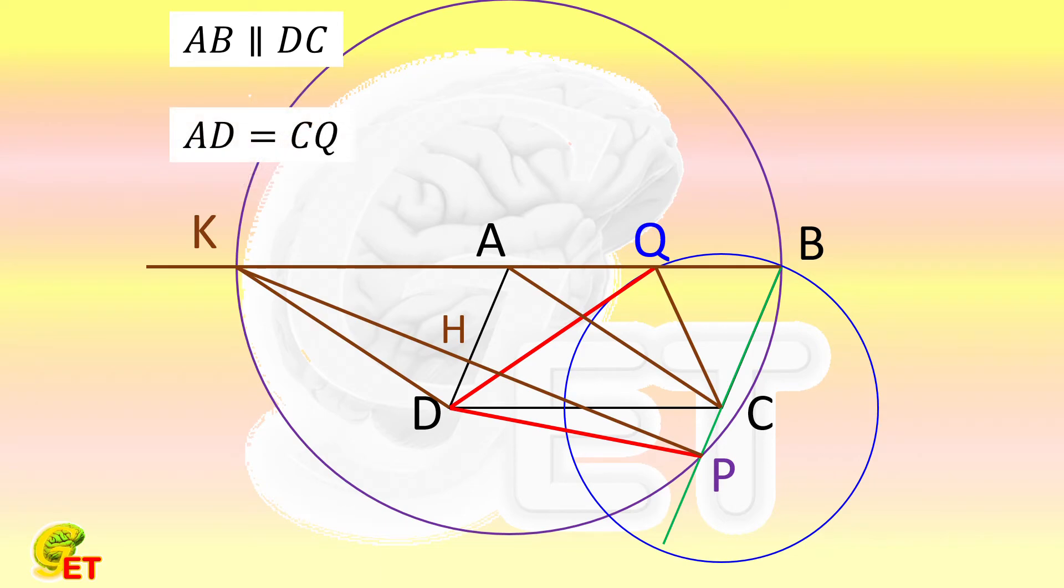Putting them together, we know the quadrilateral AQCD is an isosceles trapezoid. The diagonals of an isosceles trapezoid AC and DQ are therefore equal to each other.